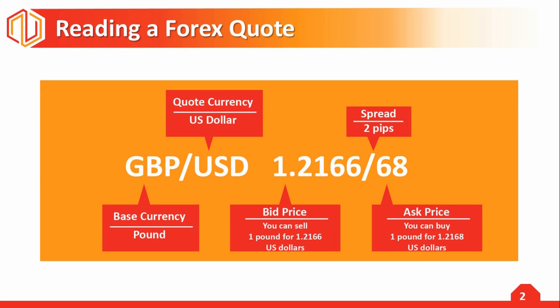From the broker's perspective, when you are the potential buyer, the broker will ask for a little more than what he might be willing to bid if you were selling. In this example, since you are interested in buying GBP — the base currency — you will pay the ask price, the broker's asking price, which is 1.2168. If you were selling, you would accept the broker's bid price, which is 1.2166.